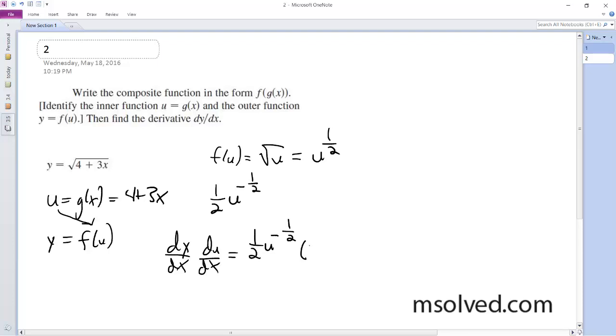And then 3 was the derivative of what's inside the exponent, or inside of it. So du here, and we substitute in u the square root of 4 plus 3x.